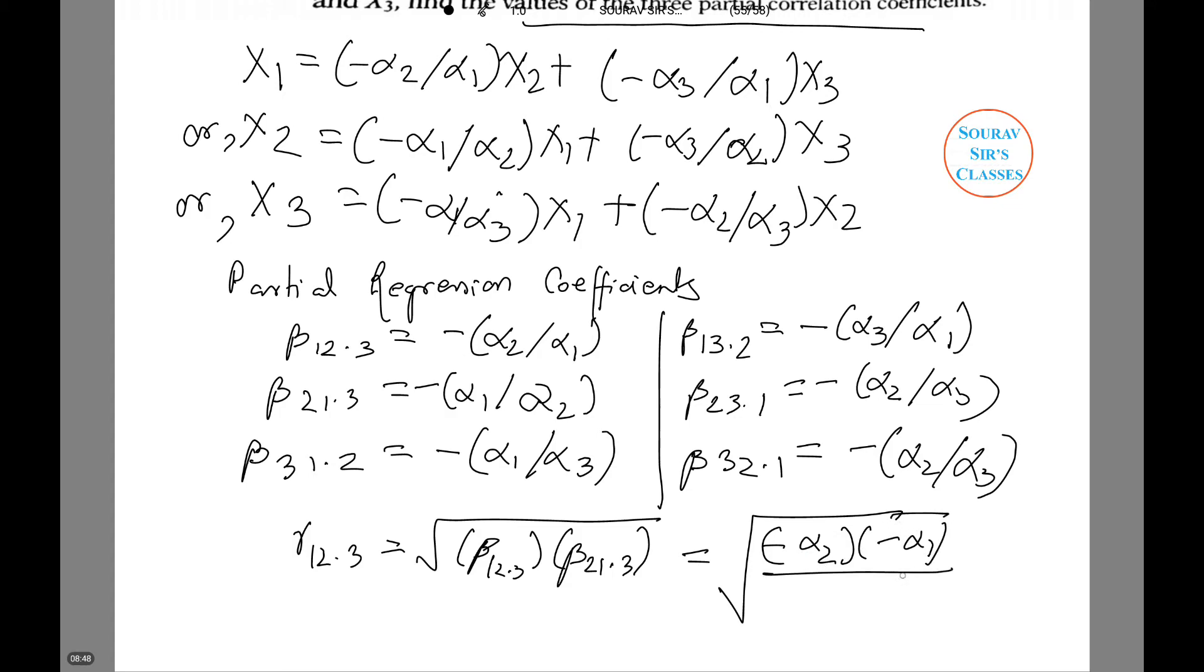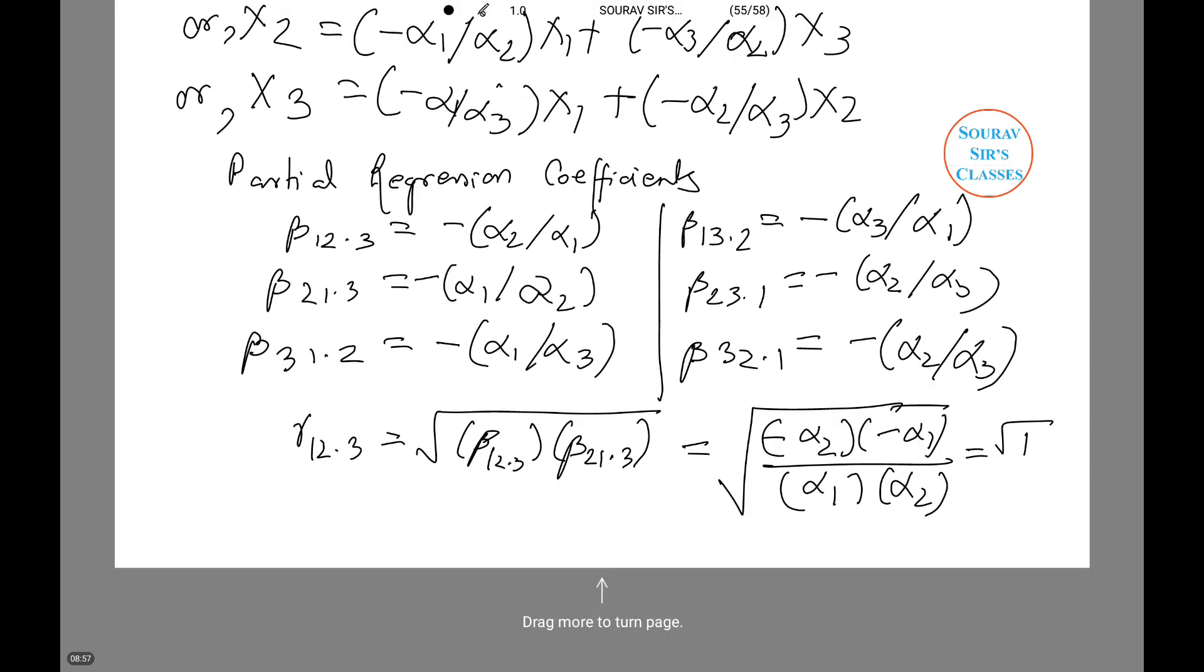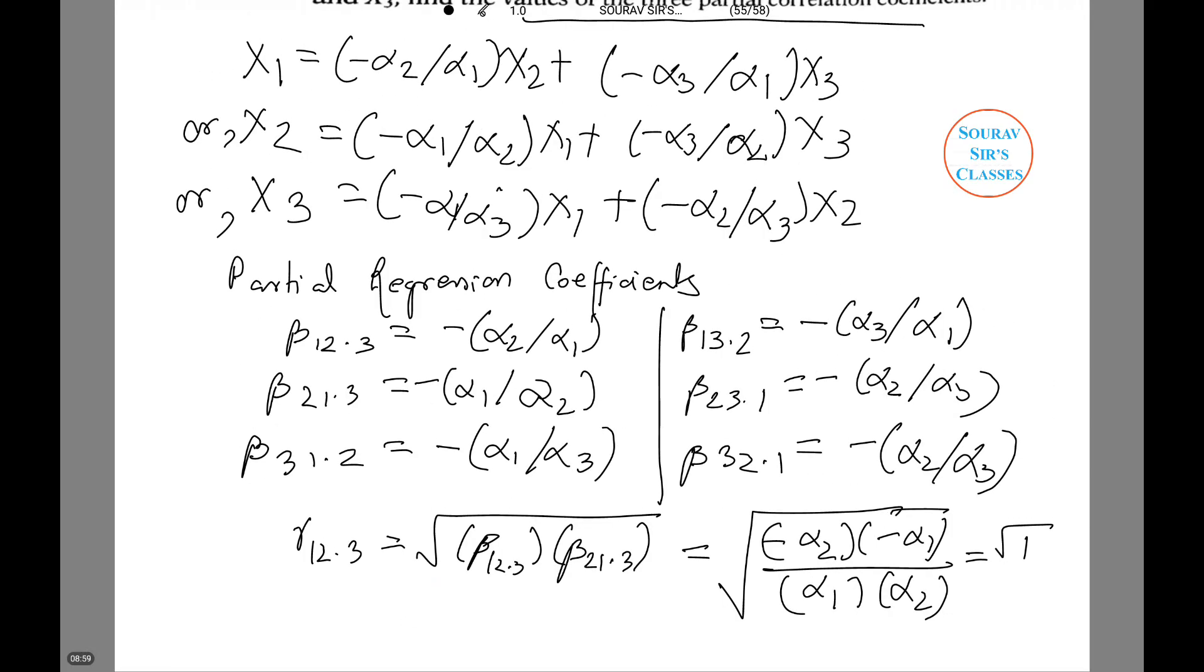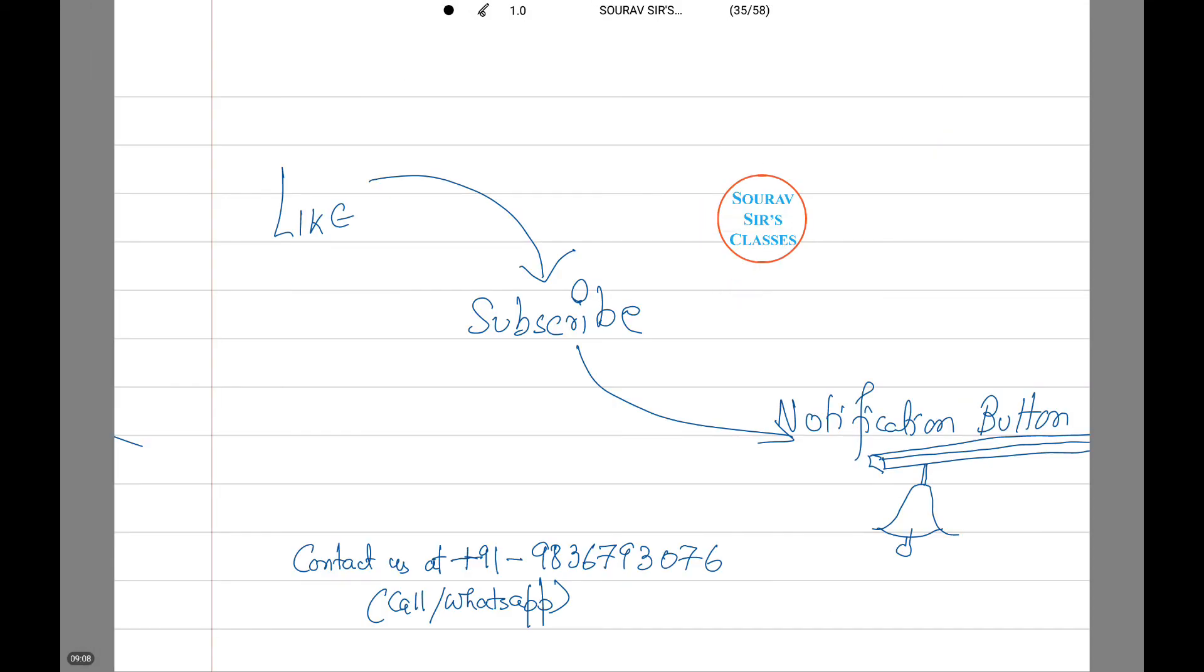This equals root 1. Thus r 1 2 dot 3 is equals to plus minus 1 and this is what the question is asked for. Thus with that we come to the end of our last question.